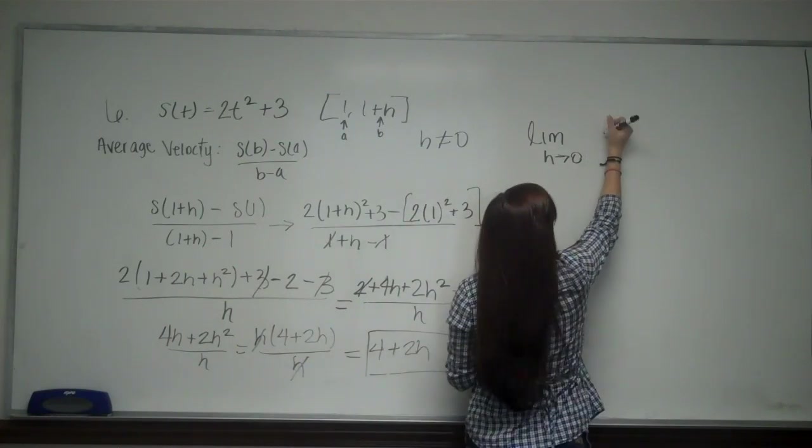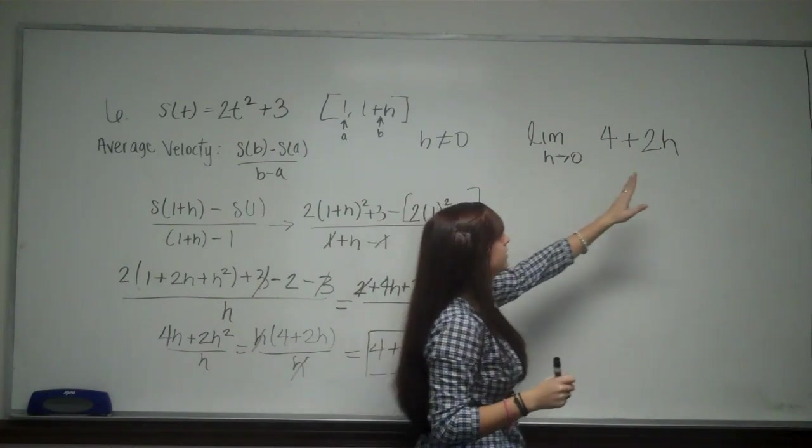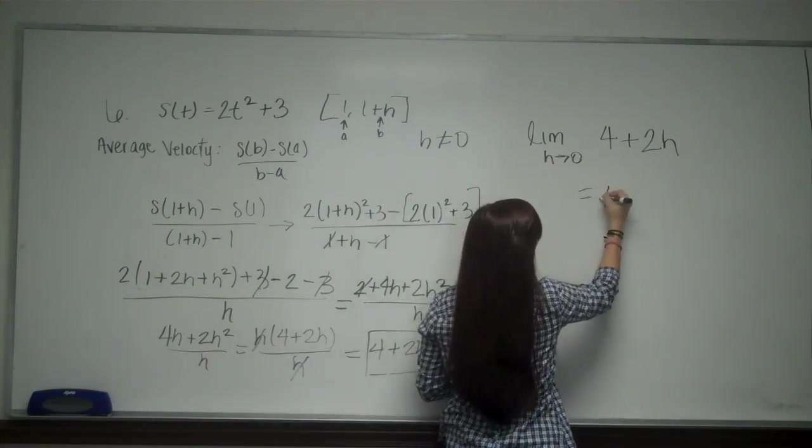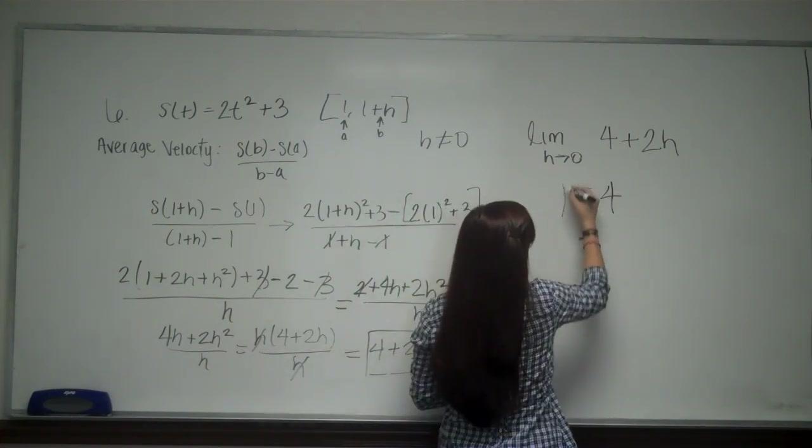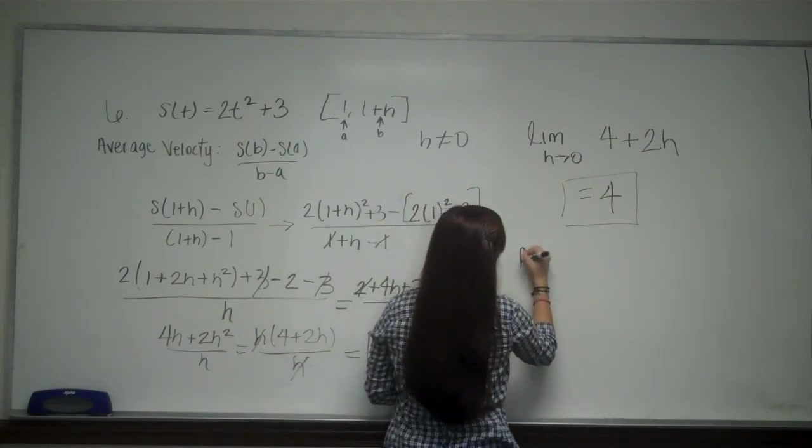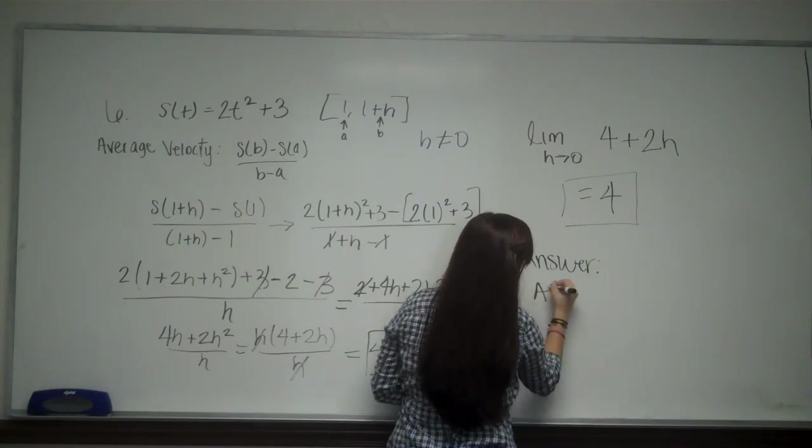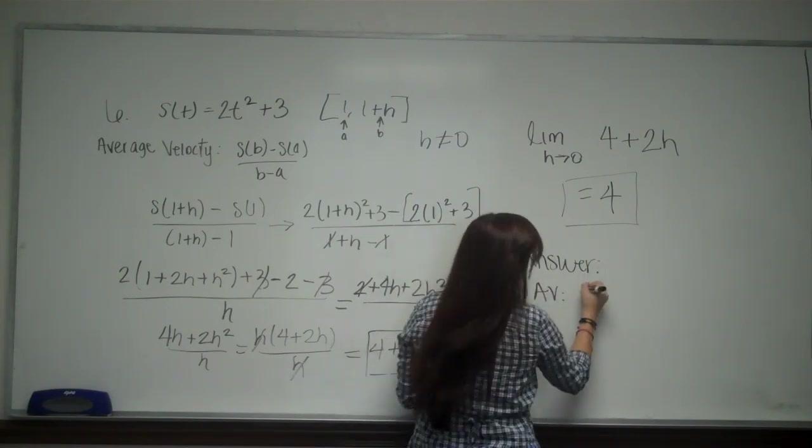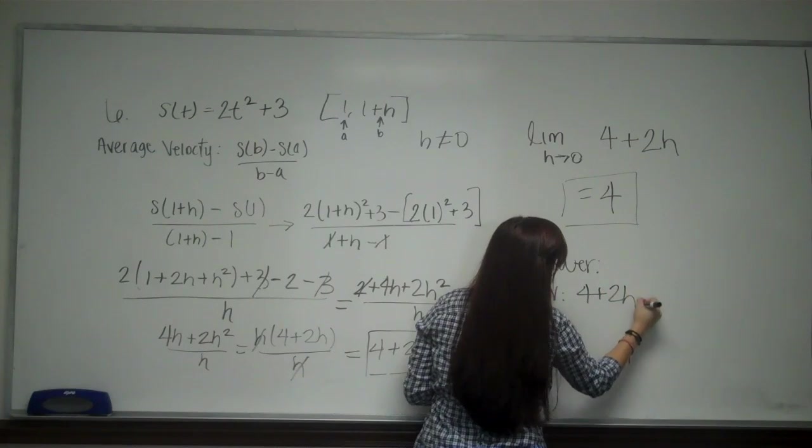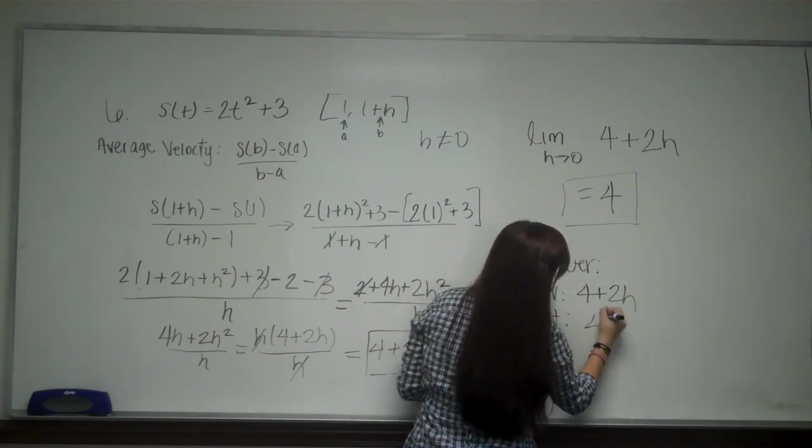I'm going to do the 4 plus 2h. So what we see is h goes to 0, I'm left with 4. So for your answer, your average is going to be 4 plus 2h, and your instantaneous is going to be 4. And this is answer choice C.